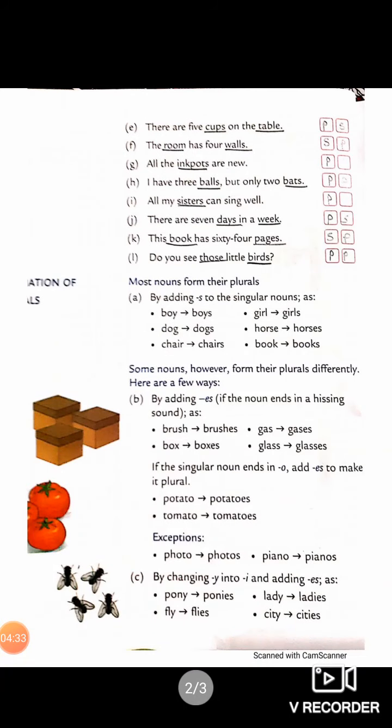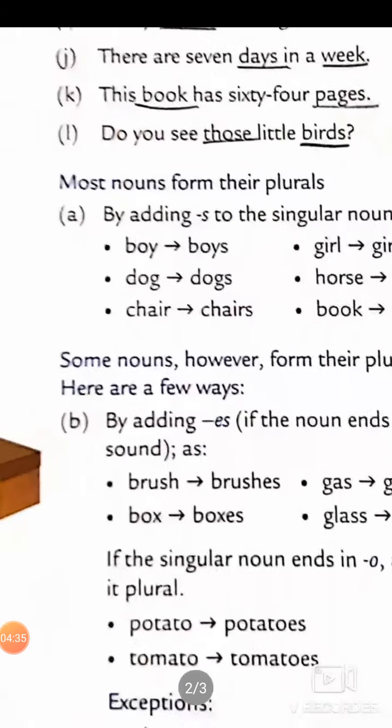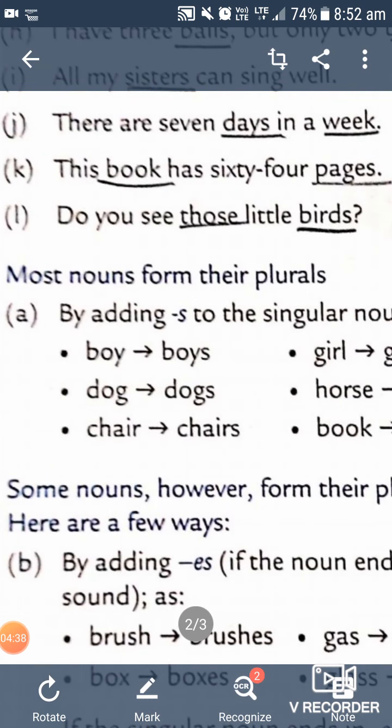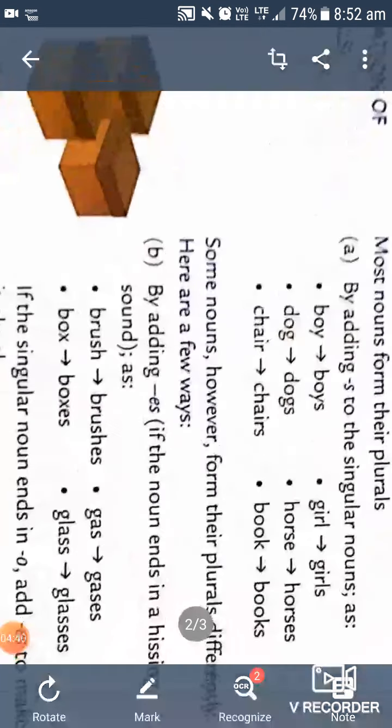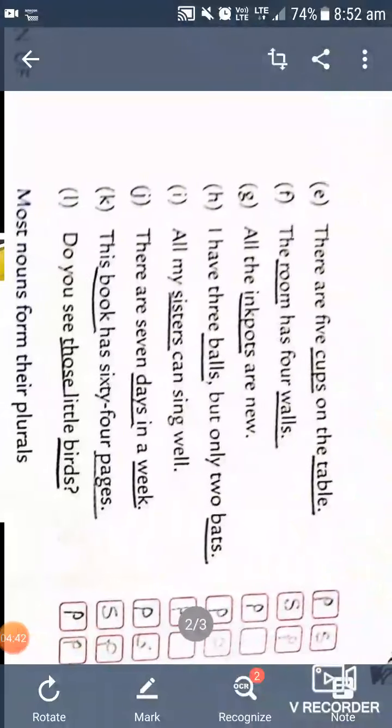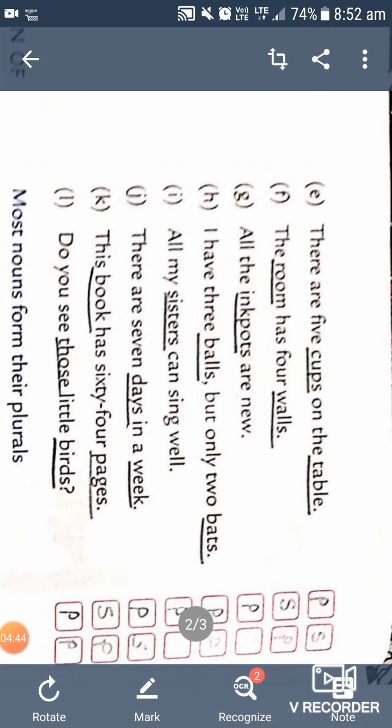There are five cups on the table. Cups is plural and table is singular. The room has four walls. Room is singular, walls is plural.